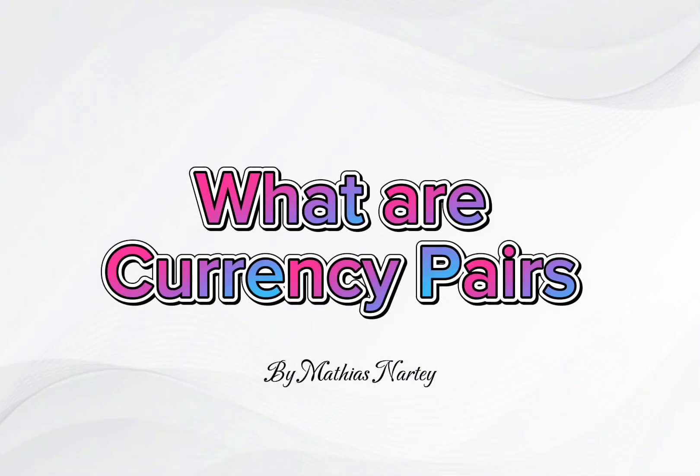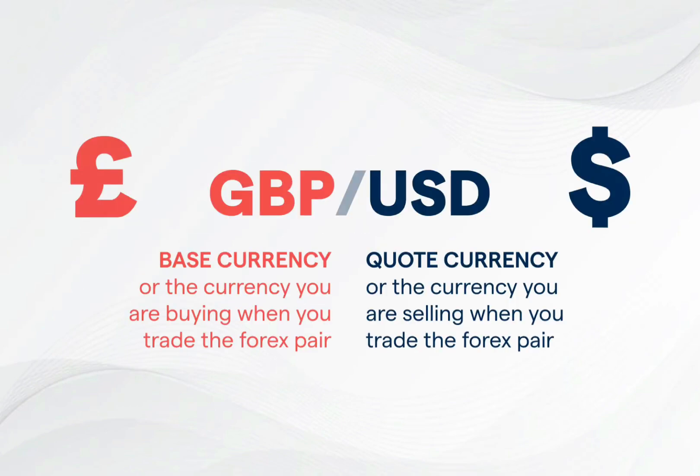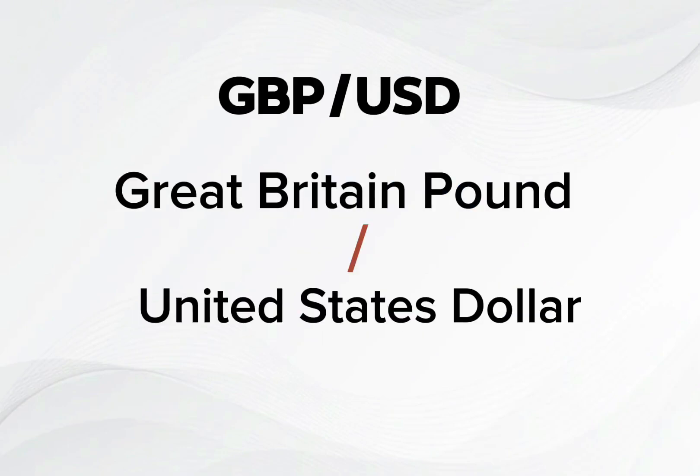Let's talk about currency pairs today. A currency pair is a combination of two currencies. For example, GBP-USD, which means GBP against USD, where the GBP is the base currency and the USD is the quote currency. The GBP stands for Great Britain